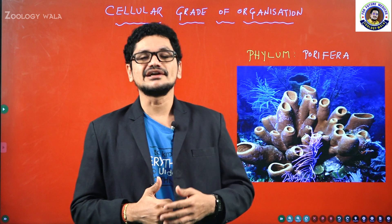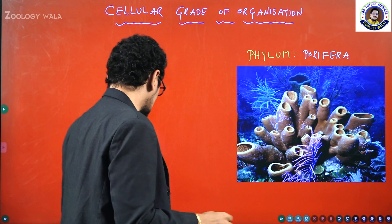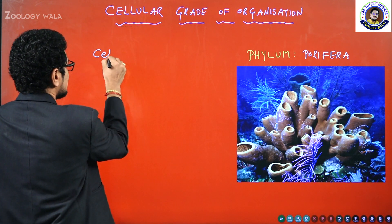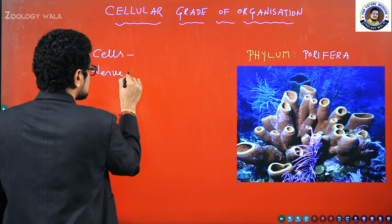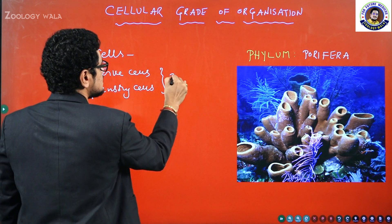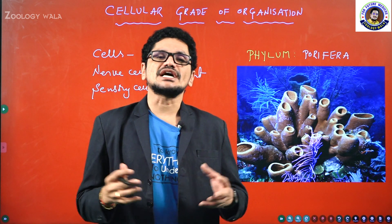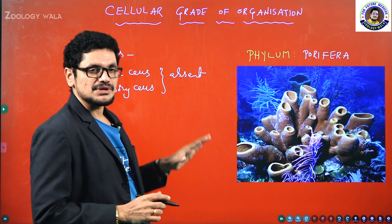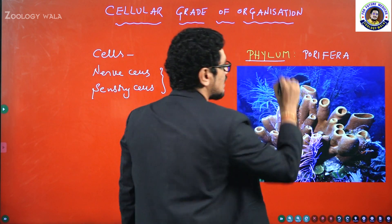The cellular level of organization is where only cells are present in the animal kingdom. For example, if you observe Porifera — nothing but sponges — only cells are present. There are no coordinating cells, such as nerve cells and sensory cells. Nerve cells and sensory cells are absent in phylum Porifera. A number of cells are present, and the cells are loosely aggregated to form two layers, though we do not call them germ layers. Only cells are present and loose cellular aggregation is observed.